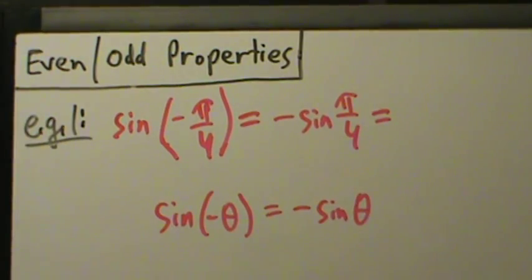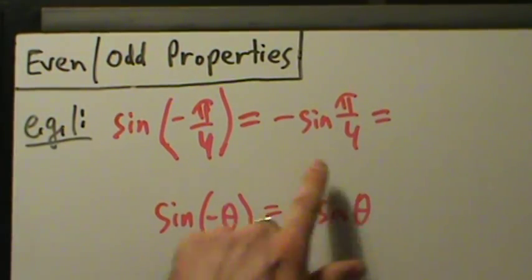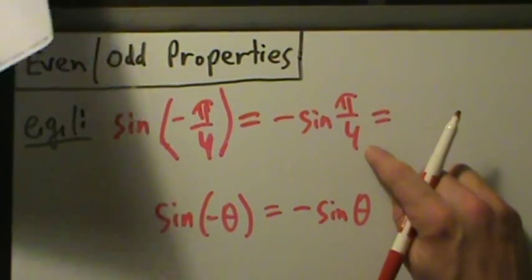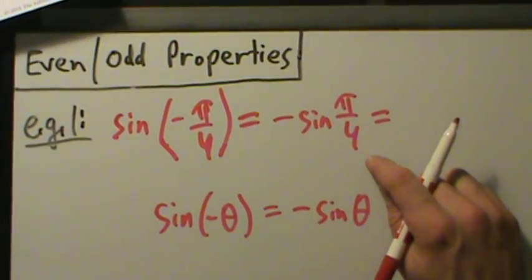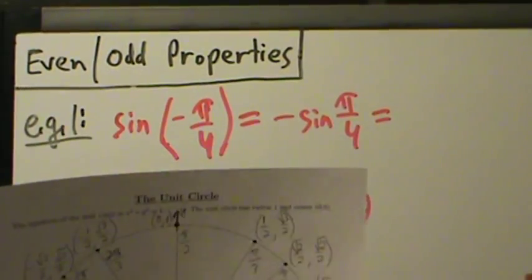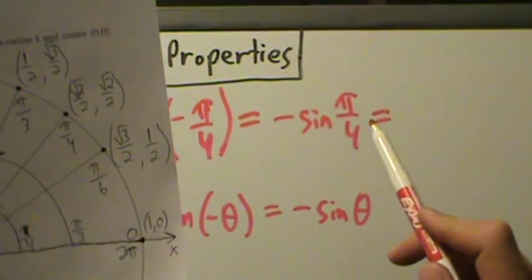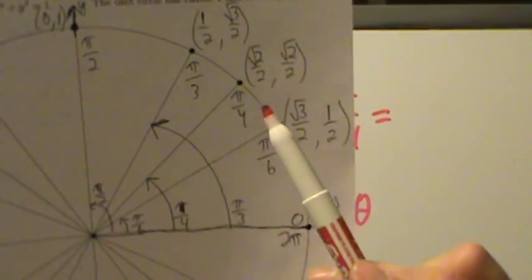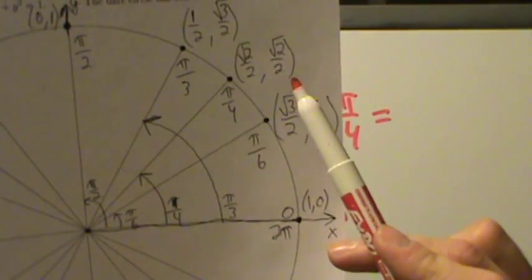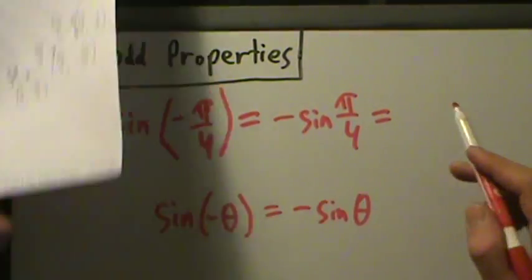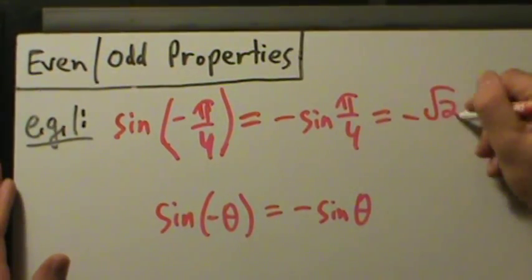What is the sine of pi over 4? Let's go back to our unit circle. This is one of these special angles we want to have memorized. Sine is the y-coordinate, and at pi over 4, the y-coordinate is root 2 over 2. So the answer is negative root 2 over 2.